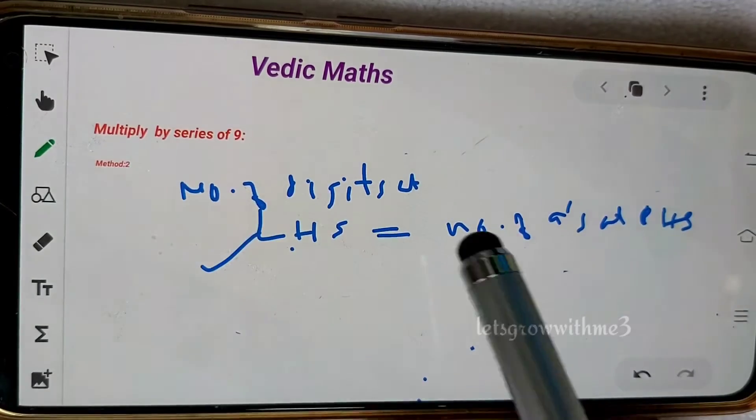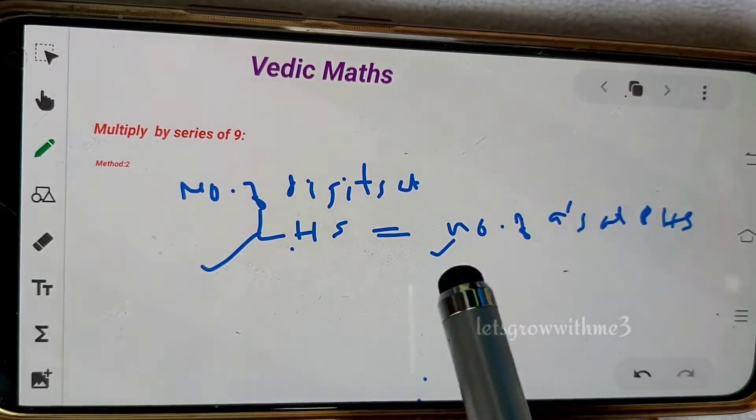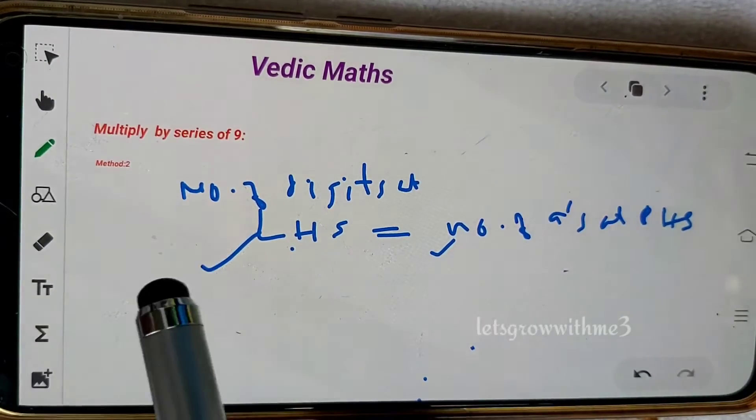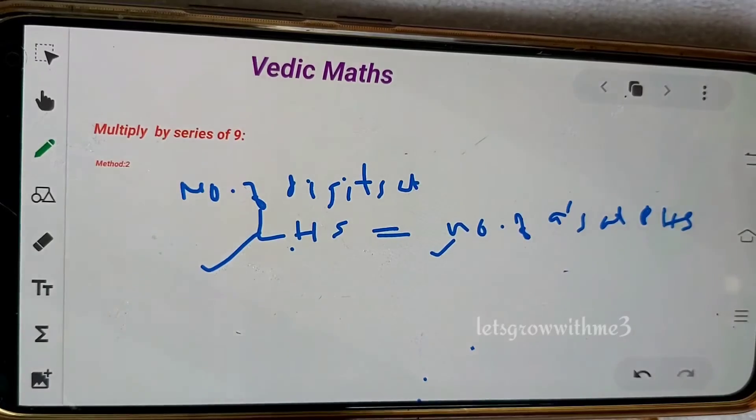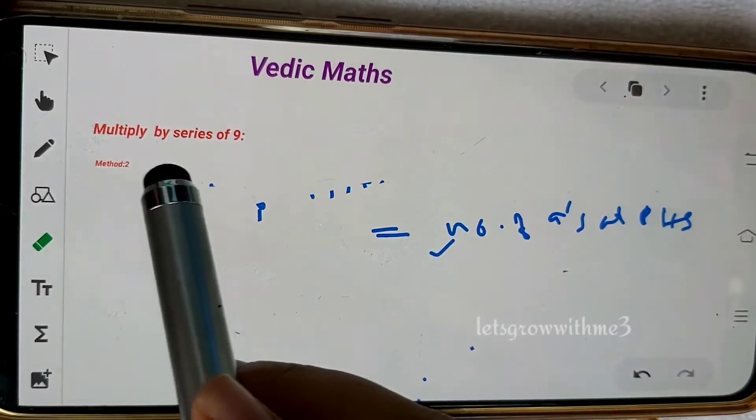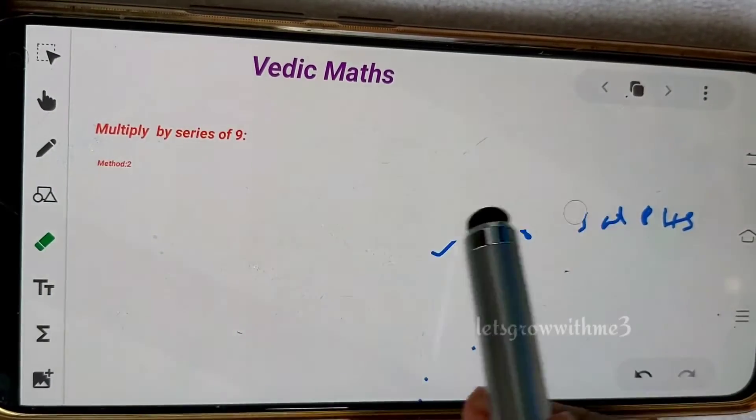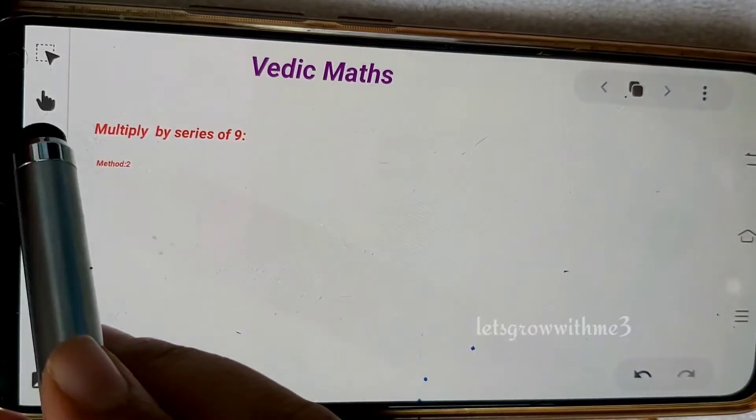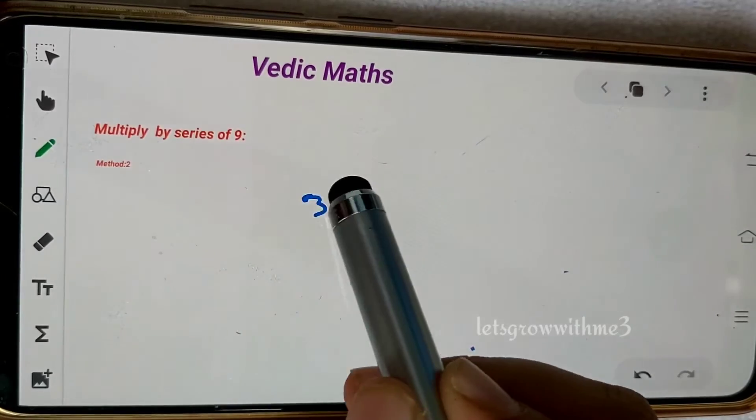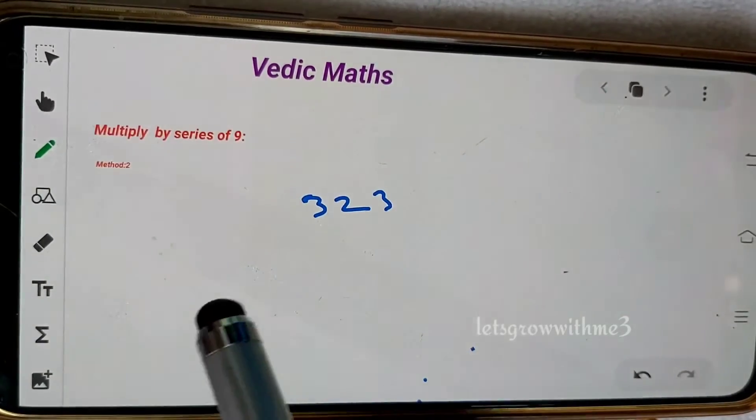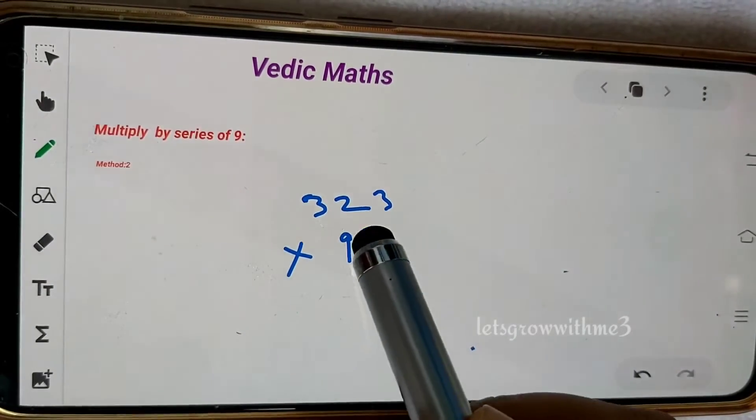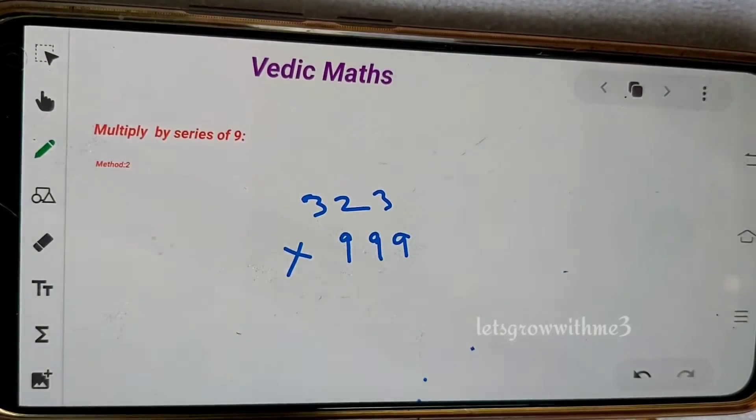Let's see how to do this kind of questions when both sides have the same number of digits. Let me start with simple examples. The first one is 323 times 999. If you have three digits in first number, you should have the same three 9s in the second number.